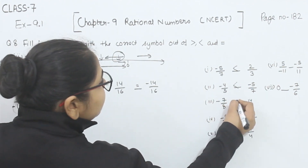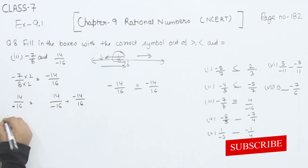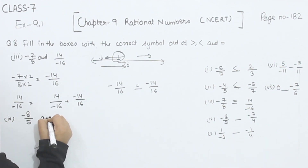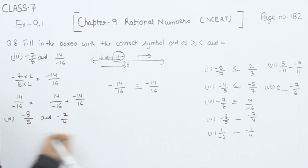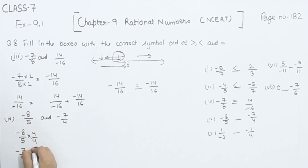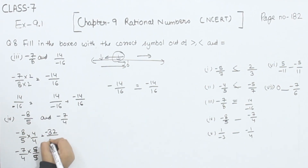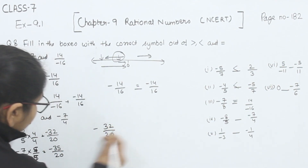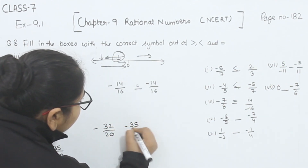So I am going to put the equal sign here. Now comes part 4. In part 4, we have minus 8 by 5 and minus 7 by 4. I am going to multiply by each other's denominator. So 8 × 4 = 32 and 5 × 4 = 20, and 5 × 7 = 35 and 5 × 4 = 20. We are having minus 32 by 20 and minus 35 by 20.